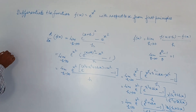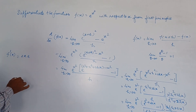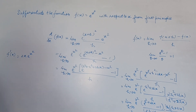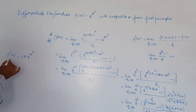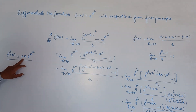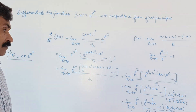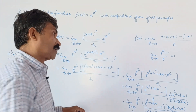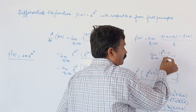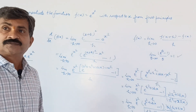So finally, what we are getting is 2x times e raised to the power x squared. The differentiation of this function using first principle gives us f dash of x equal to 2x e raised to the power x squared. You must remember the standard result: e raised to the power theta minus 1 divided by theta, as theta tends to zero, equals 1.